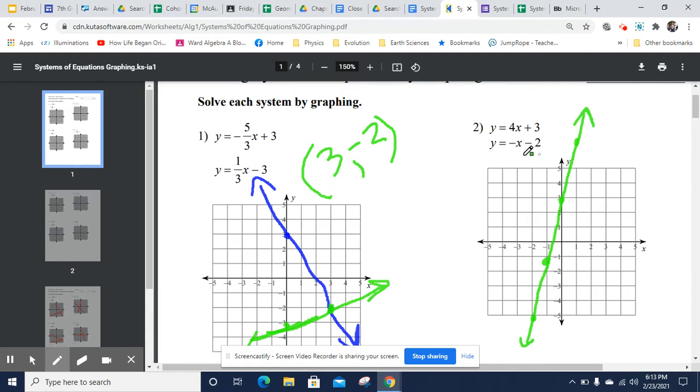So here we have negative x minus 2. y equals negative x minus 2. I'll pick a different color. We'll go back to blue. Okay. So negative 2 is the y-intercept. And our slope is negative 1, so down 1 over 1, down 1 over 1, down 1 over 1. And of course, we'll go the other way as well, up 1, back 1.